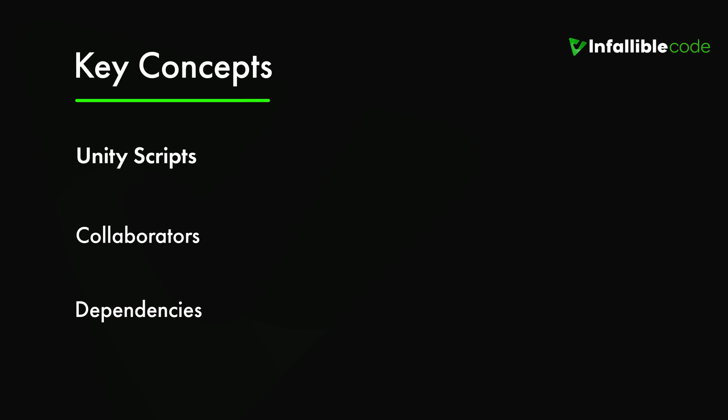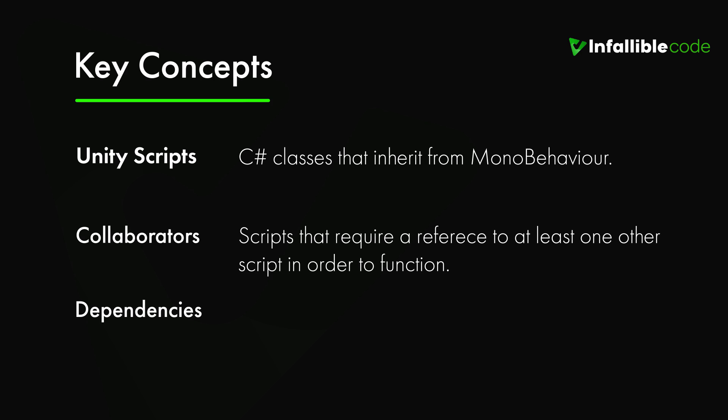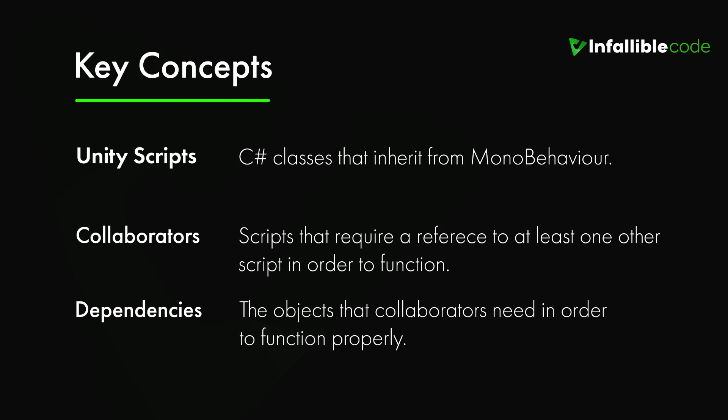Unity scripts — or just scripts as I'll refer to them throughout this video — are C# classes that inherit from MonoBehaviour. A lot of the access methods discussed are universal, but some are specific to Unity and can only be used by Unity scripts. Collaborators are scripts that require a reference to at least one other script in order to function. They're the most common type of script you'll write because not many scripts are designed to operate solo. Dependencies are the objects that collaborators need in order to function properly — without them your code just fails to run.